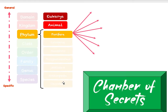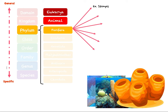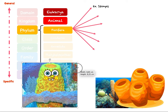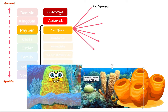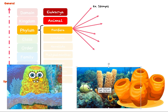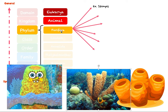Let's start with Porifera. An example would be sponges — think of SpongeBob. He lives in an aquatic environment under the ocean and he is actually a sponge, which is the name for this real organism. These are organisms classified under Porifera; sponges are the key example you need to know.